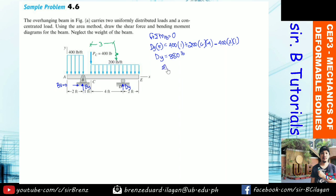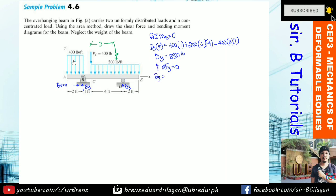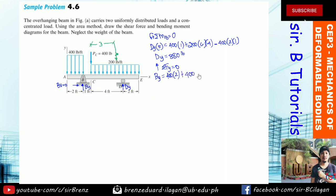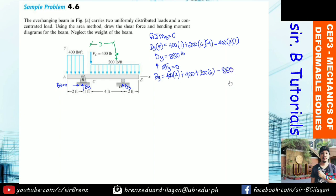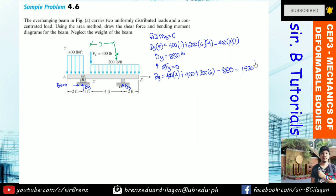To solve for By, take summation of forces in the Y direction equals zero. By equals 400×2 plus 400 plus 200×6 minus Dy, which is 880. So By = 400×2 + 400 + 200×6 − 880 = 1,520 pounds.